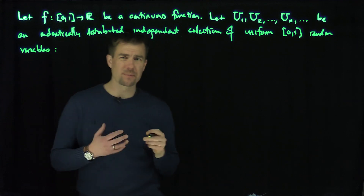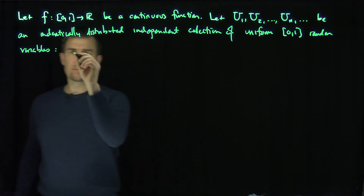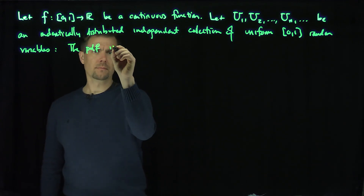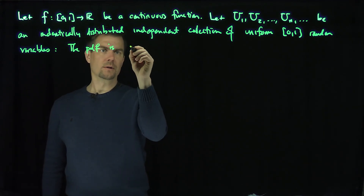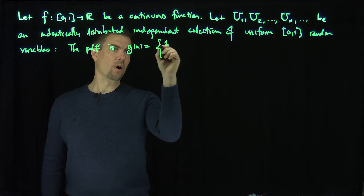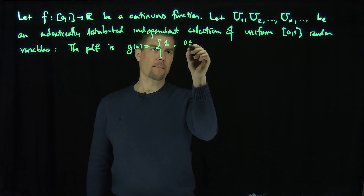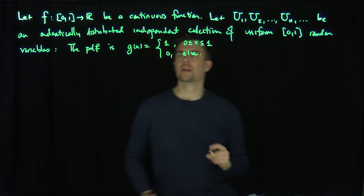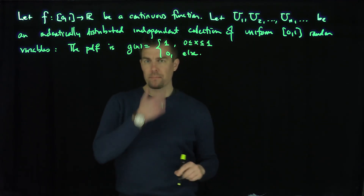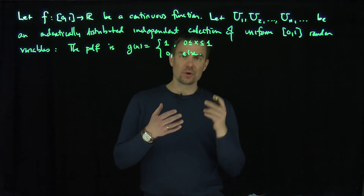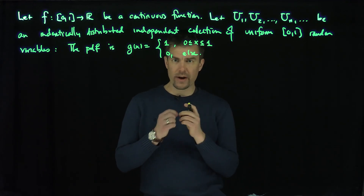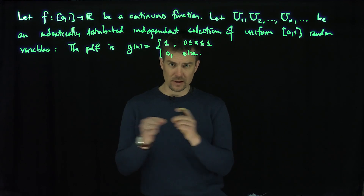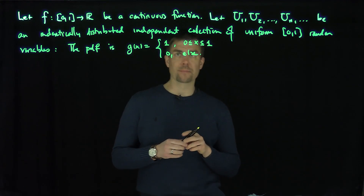What that means is that their pdf — their probability density function — is g of x, and it's just going to be 1 if x is between 0 and 1, and 0 otherwise. That's the pdf of these uniform distributions. In other words, u1 through un are just independent random draws of a uniform distribution on [0,1], which means I'm selecting a point uniformly at random from the interval 0 to 1.